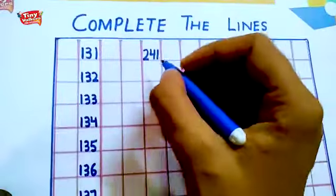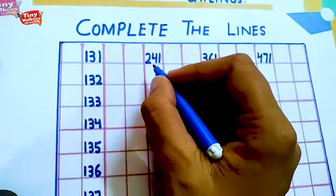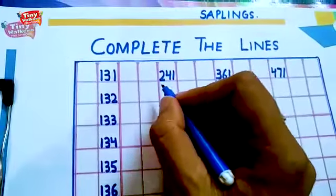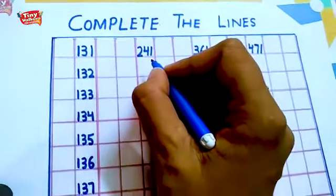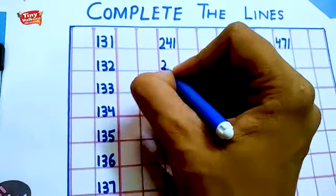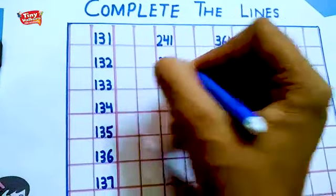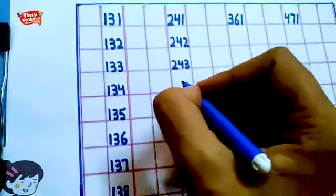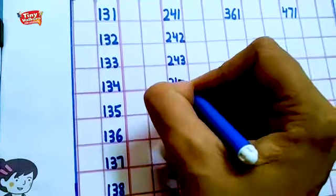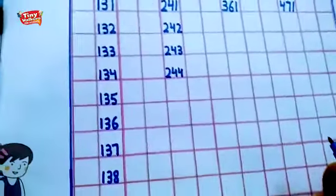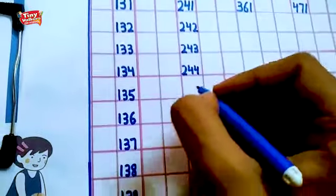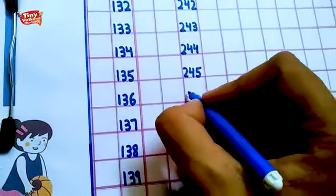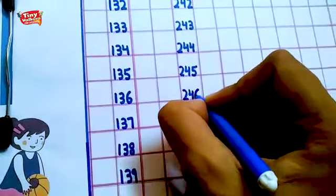Now see the next line. Let's start. 241 is 241. See the next line, 242, 243. Tell me beta, what comes after 244? Yes, 245.